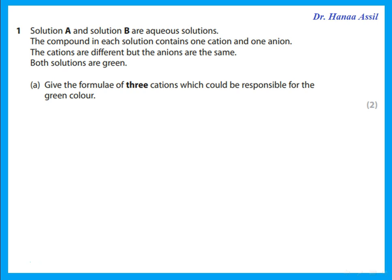The first question here says: Solution A and Solution B are aqueous solutions. The compound in each solution contains one cation and one anion. The cations are different but the anions are the same. Both solutions are green.